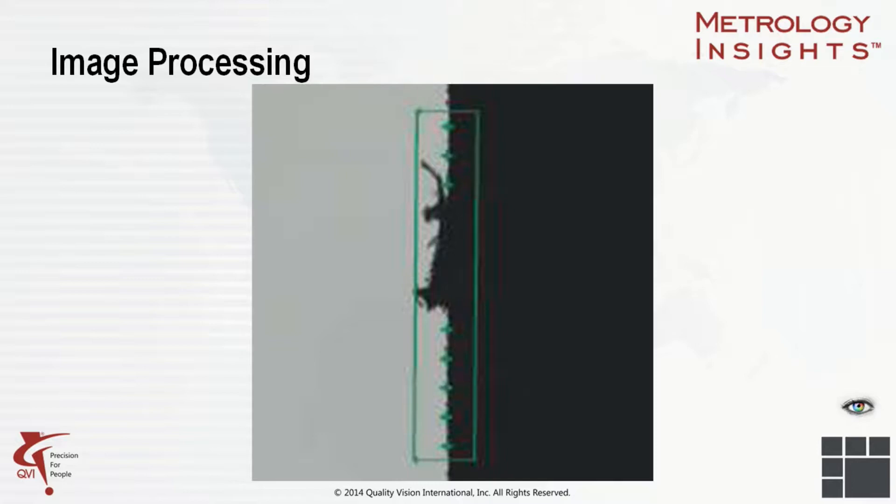Here we see an example of basic edge detection. In this scene, there is a lot of image data, most of it either all light or dark. What we're interested in is the area of transition between light and dark — the edge of the part. To speed up measurement, we can tell the measuring system where to look for an edge. The green box shows the search area used to tell the measuring system where to look for the part edge. In this case, we see the found edge, indicated by the green plus signs. We also see there is a defect of some sort, most likely dust or a burr, which can probably be easily removed and is therefore not important to the measurement.